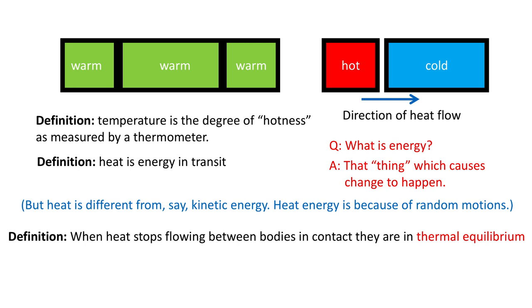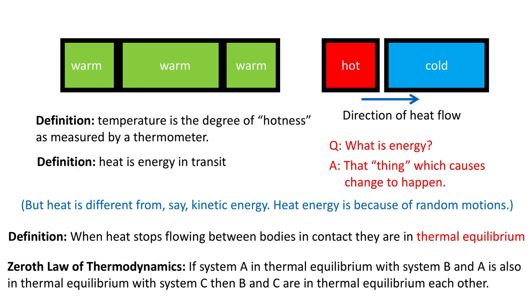And now this brings us to the zeroth law of thermodynamics. Actually, the reason it's called the zeroth law is because it is sort of so obvious: if system A is in thermal equilibrium with system B, and if A is also in thermal equilibrium with system C, then B and C have to be in thermal equilibrium with each other. Like up here you see there are three bodies which are in thermal equilibrium with each other. They are not exchanging heat anymore because they have now come to the same common temperature.